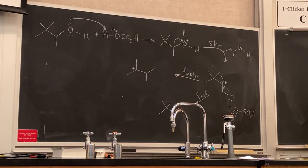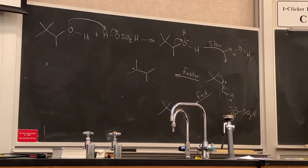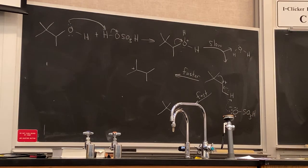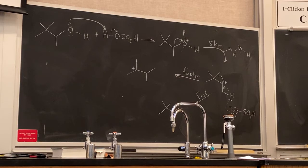The most common case is where we have a secondary carbocation and a 1,2-shift gives us a tertiary carbocation. Other instances include a tertiary carbocation rearranging to give a resonance-stabilized tertiary carbocation, or a strained tertiary carbocation rearranging to give a less strained one. If you do the homework problems, you'll be exposed to some of those less common types.